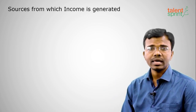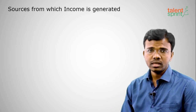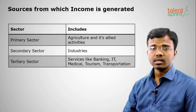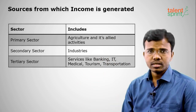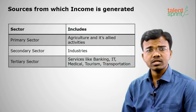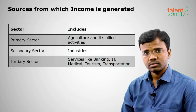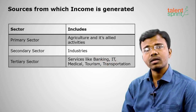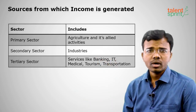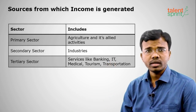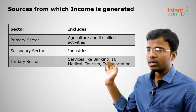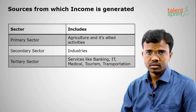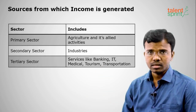Before calculating national income we need to know from which sources income is generated. There are three sectors: the primary sector, the secondary sector, and the tertiary sector. The primary sector means those who touch raw material first — agriculture and its allied activities such as animal husbandry, poultry, fishing, dairy, and also mining.